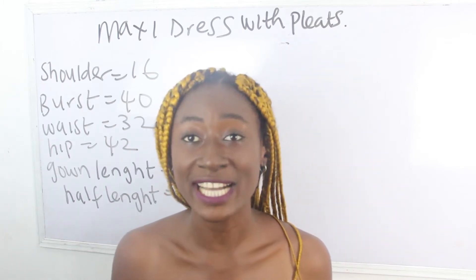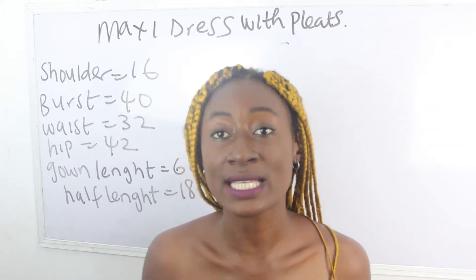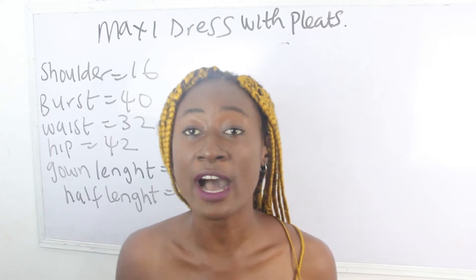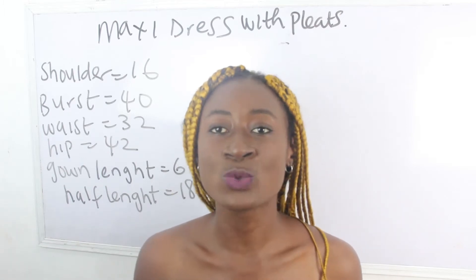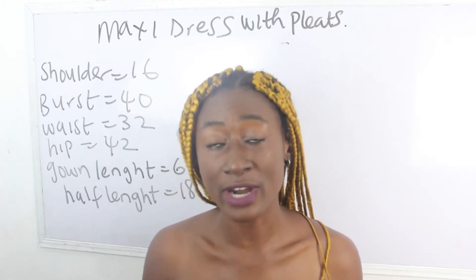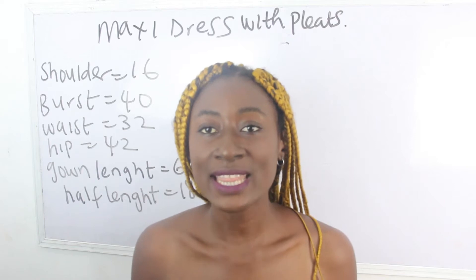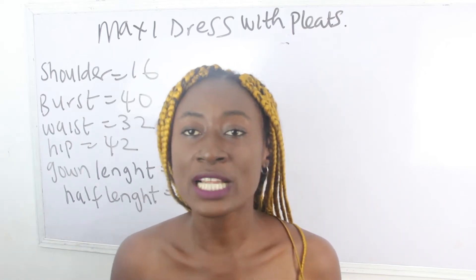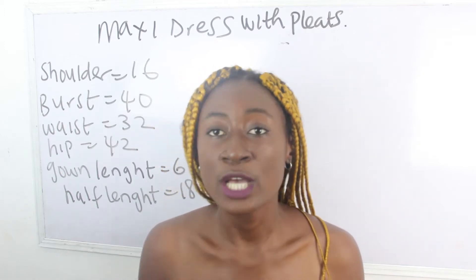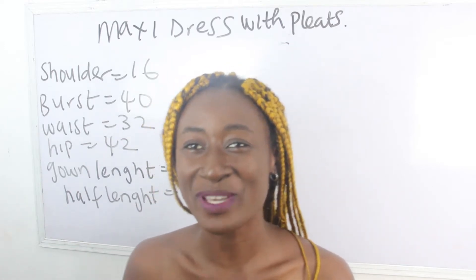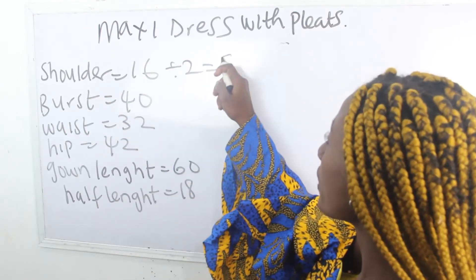The basic measurements required to achieve this style are: shoulder, bust, waist, hip, and gown length. We also have shoulder to half length, which is usually two inches above your navel — that is where your basic block ends. From your navel to your desired gown length is where you are going to have your pleats, so it is necessary to have your half length measurement separate from your basic measurements.